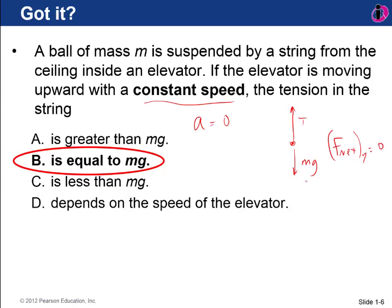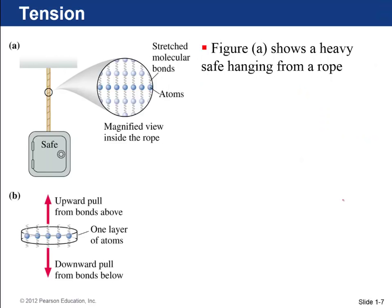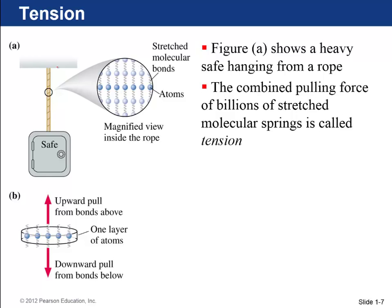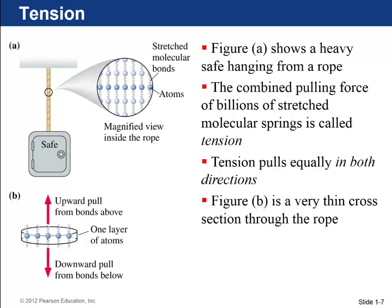Let's talk more about tension. The figure shows a safe hanging from a ceiling by a rope, with a magnified view of billions of atoms connected by molecular bonds modeled as tiny springs. The fact that all these little springs are stretched is what we call tension. Tension pulls equally in both directions — a thin cross-section of rope is pulled equally from above and below, so it's in equilibrium.